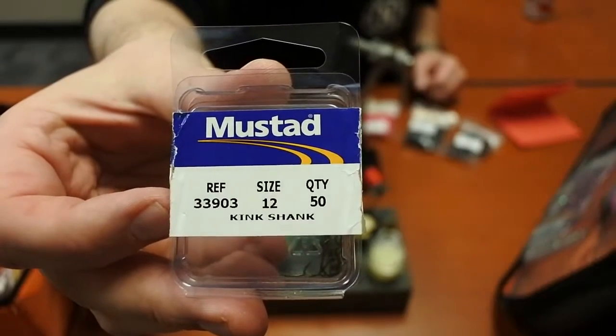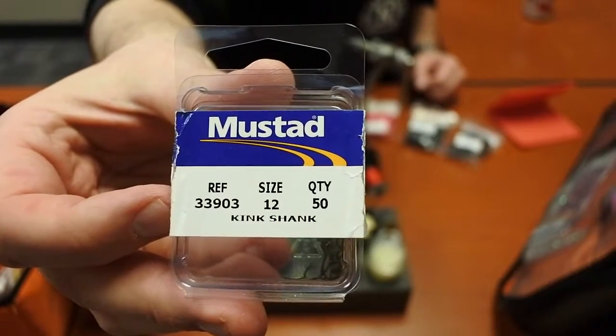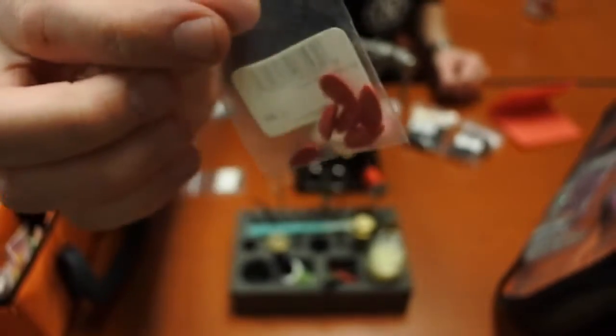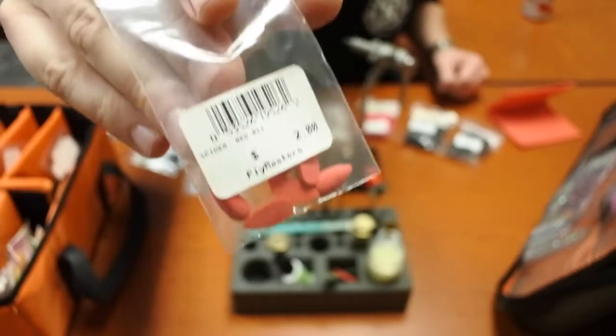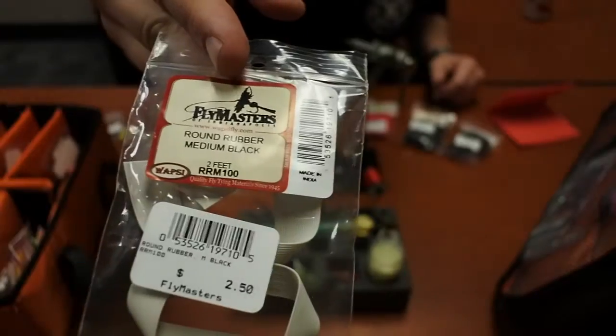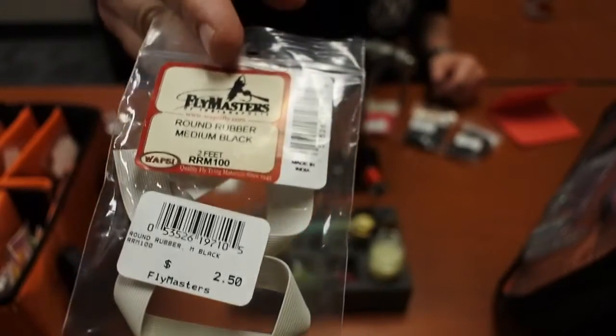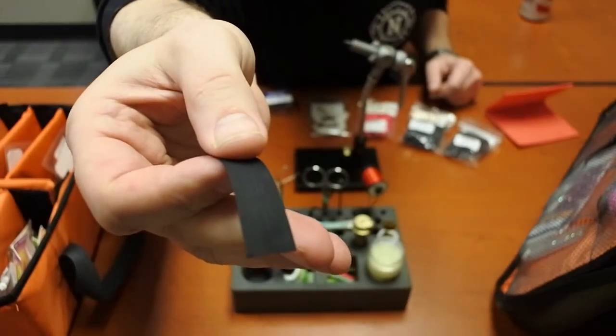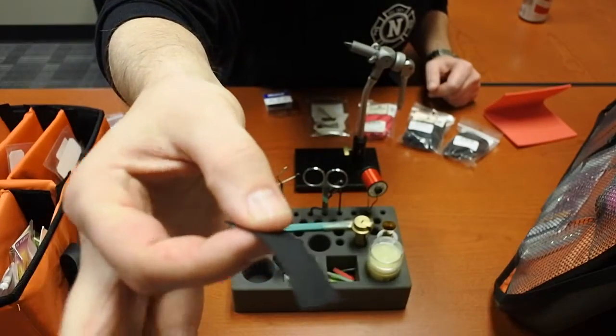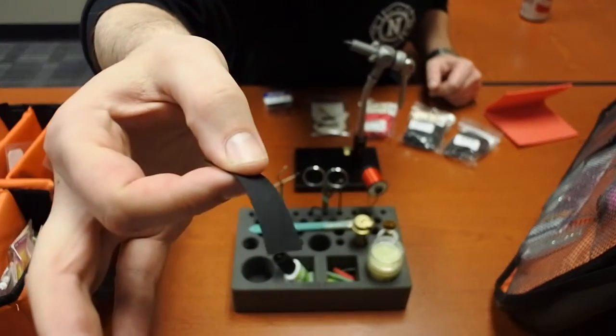The Foam Spider: size 12 kink shank hook, size 12 foam bodies. Make sure that you get matching hooks and bodies. Leg material comes in a long strip. Here's an example of the strip cut and then you just pull off the individual legs.